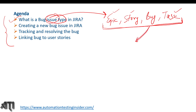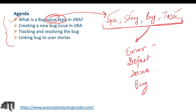Bug is just another type of issue type in Jira, just like epic, story, and task. It could be an error, defect, or a bug itself — terms we've already discussed in our manual testing series. As a tester, when we raise a defect or an issue, we use the bug type of issue in Jira.